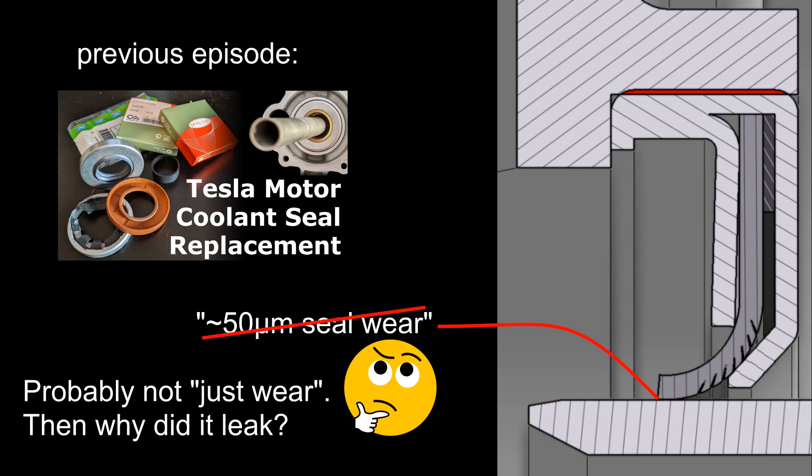So my earlier thickness reduction measurement of 50 microns can be easily explained by strains induced during lip production and installation steps, instead of only wear. So if the seal is not worn out, why did it start to leak? This problem requires further research.